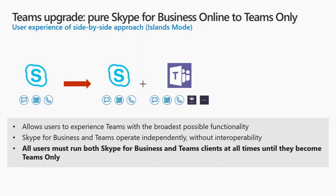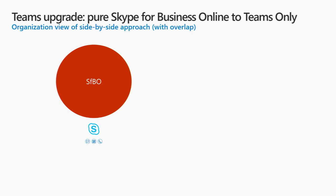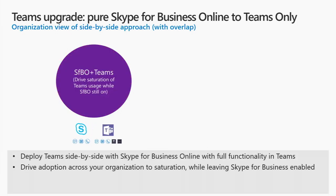So you have this Skype for Business Online deployment. From there you go into Islands mode — now people can do meetings, calling, and IM from both clients, but they'll get to experience the additional functionality of Teams such as the Teams add-ins. At a certain point you get to the phase where people say hey, I like Teams, I'll go to Teams. That was our migration approach from Skype for Business Online side-by-side to a full Teams deployment once we're done.